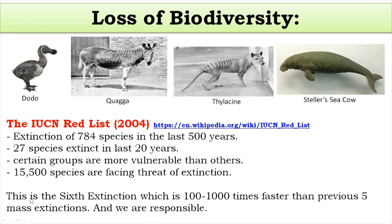Extinction of large groups of organisms, called mass extinction, has happened in the past evolutionary history. To be precise, there have been five mass extinctions so far in the world's history. The present extinction is the sixth mass extinction. One key difference between the past five mass extinctions and the present one is that this mass extinction is 100 to 1000 times faster than the previous five. This speed is because of human activities, and therefore we are said to be responsible for the sixth mass extinction.